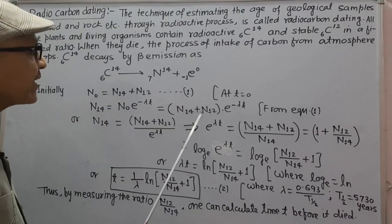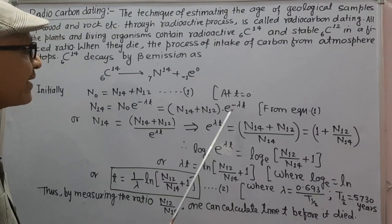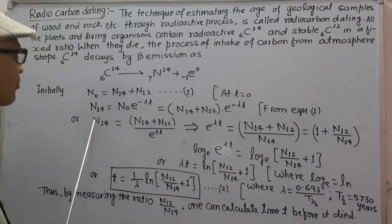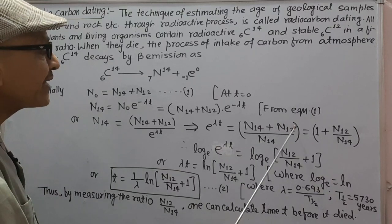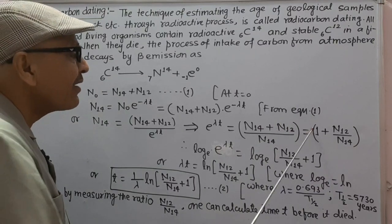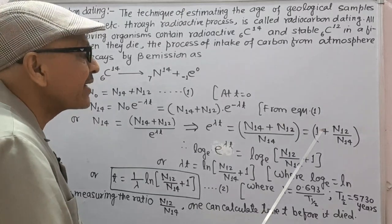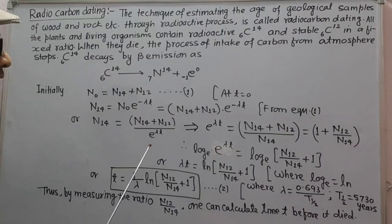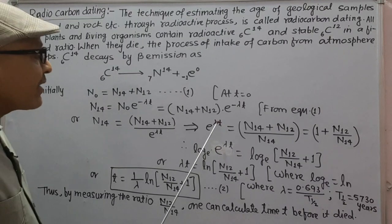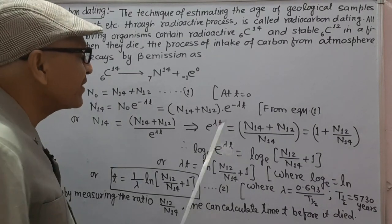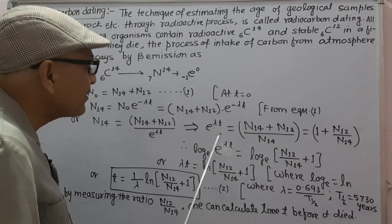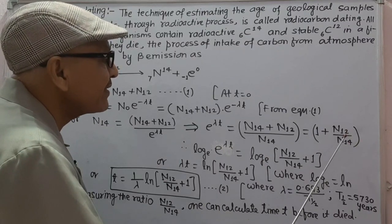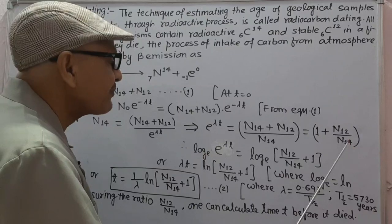Which gives N14 as N14 plus N12 upon e to power lambda t. This gives e to power lambda t as N14 plus N12 upon N14, which is 1 plus N12 upon N14. Taking log base e, lambda t equals ln of 1 plus N12 upon N14.